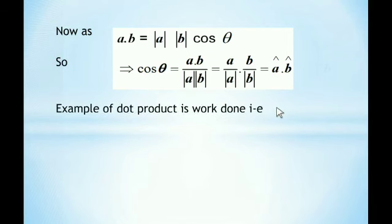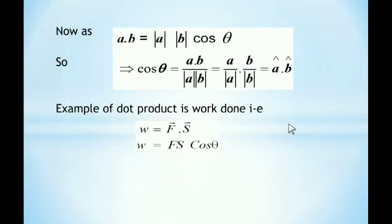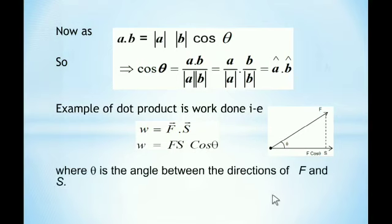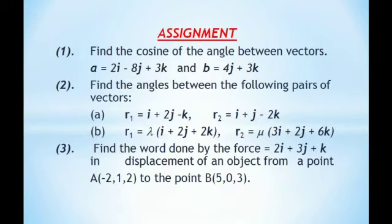One of the best examples of the dot product is work done. We know that W = F·S, where F is the force and S is the displacement. Expanding the dot product: W = F·S·cosθ, where θ is the angle between the force and the displacement. Look at the diagram — the force is applied at an angle, and the dot product of force and displacement equals the work done, where θ is the angle between the directions of F and S.